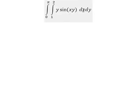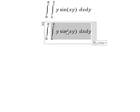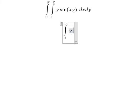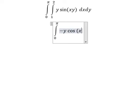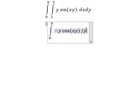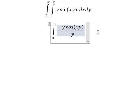So if we do this integration in here, you will have - we put y in here and we have negative cosine of xy over y, because y in this situation is just like the number in here.